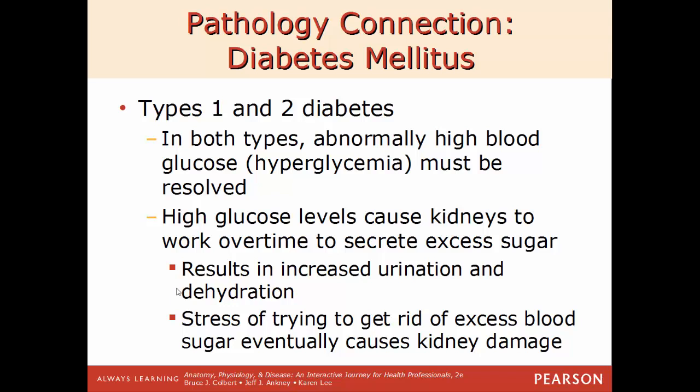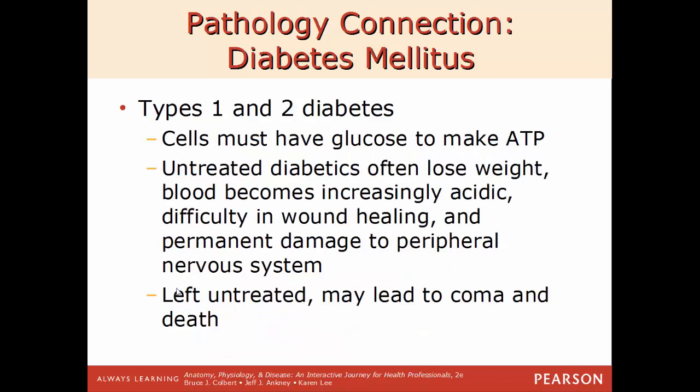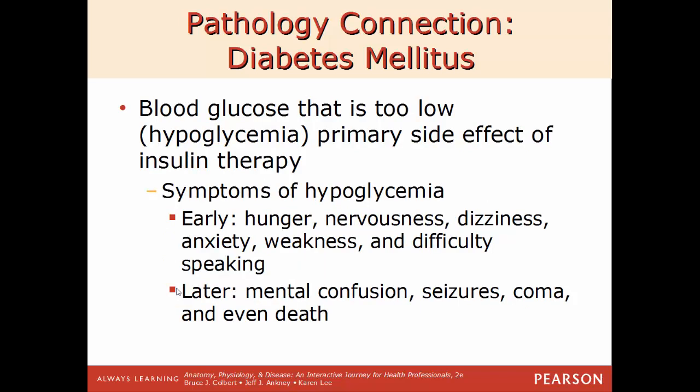For both type 1 and type 2 diabetes, the abnormally high blood glucose must be resolved. High glucose levels cause the kidneys to work much harder and secrete excess sugar in the urine — leading to increased urination and dehydration. Sugar should not be present in urine; when it is, it means it's not being picked up by cells, indicating a pancreatic issue. The stress on kidneys can lead to kidney damage. If cells don't have glucose they can't make ATP — the energy molecule all cells need. Untreated diabetes can cause weight loss, permanent damage to peripheral nerves, increasingly acidic blood, difficulty with wound healing, coma, and can be fatal.